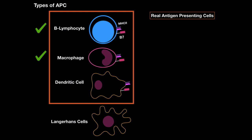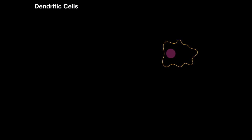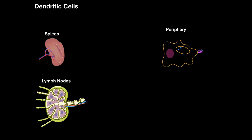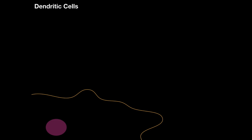Lastly, let's look at dendritic cells. These cells can be found in the spleen or lymph nodes where T-cells are. In peripheral tissue, they can phagocytose any type of antigen and present it on MHC class 2 or MHC class 1, along with B7. They can then travel to secondary lymphoid organs like the lymph node to present the antigen. These cells are experts in antigen presentation because they migrate very easily. Their surface has MHC1, MHC2, and B7 — essential for all antigen-presenting cells — plus many adhesion molecules promoting T-lymphocyte attachment, and other receptors allowing them to bind microorganisms.